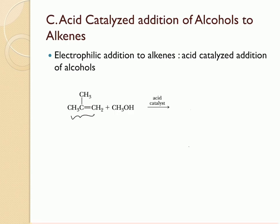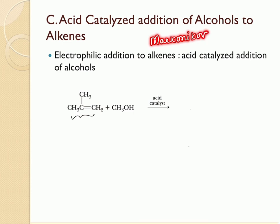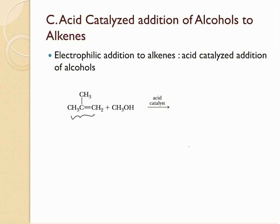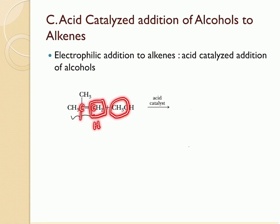The third way to synthesize ethers is through acid-catalyzed addition of alcohols to alkenes. This is an electrophilic addition reaction following Markovnikov's rule, where the electrophile is added to the carbon with the most hydrogens across the double bond. The hydrogen adds to that carbon, and the OCH3 from methanol adds to the other carbon, giving a tertiary butyl methyl ether as the product.